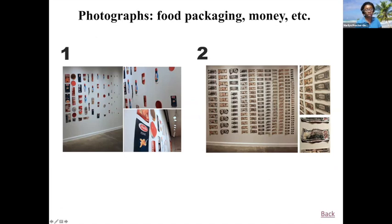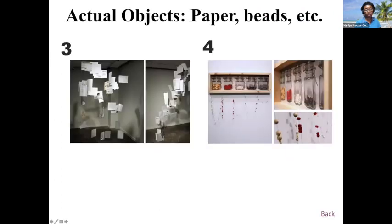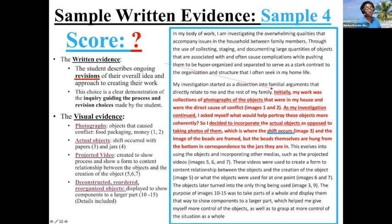A shift occurred, as stated in the written evidence. The student decided to actually use the objects — not just photographs. So these are actual pieces of paper, maybe letters or mail. The student decided to hang these in the space. Then another transition occurred on slide four, where photographs of the jars are there but the artist decided to use actual beads to hang underneath. So the transition, the shift is occurring — it's very important. And not only is it in the written text, but the visual evidence is there as well.